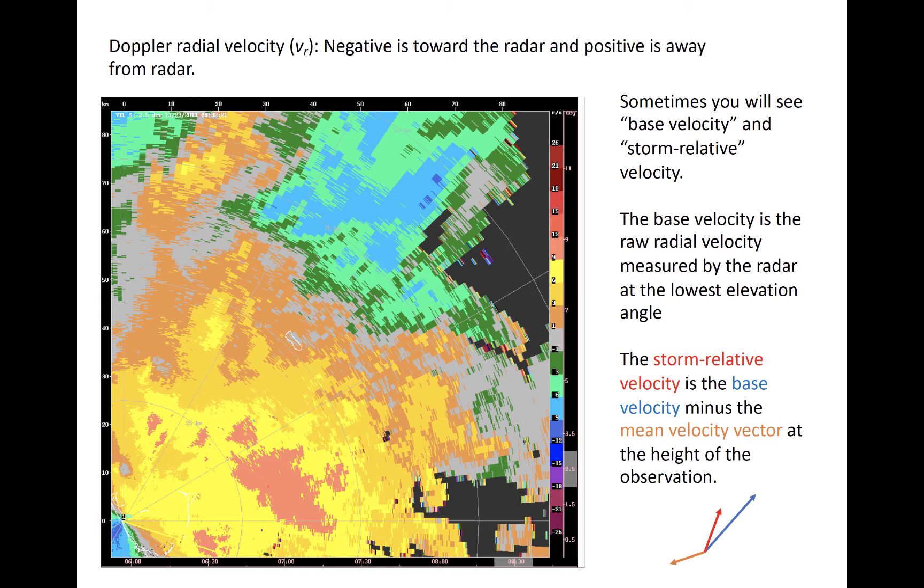You may see the term base velocity used sometimes, and this just describes the radial velocity of the lowest tilt. Another field that you may encounter is called storm relative velocity. It is the wind vector that remains after the background motion of the flow is subtracted from the total radial velocity vector. An example of the vector algebra is illustrated at the bottom right here.